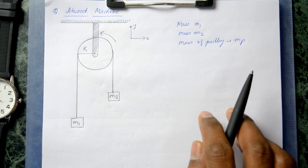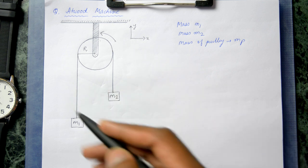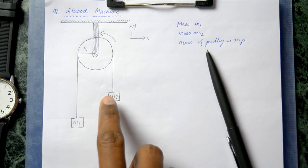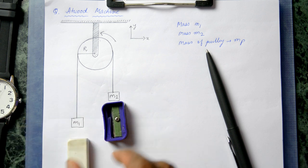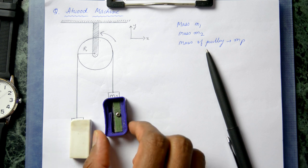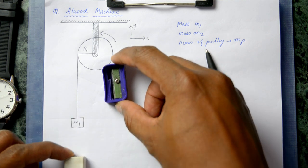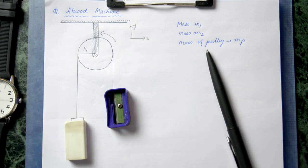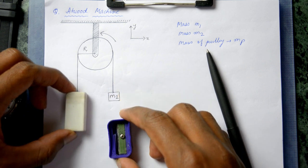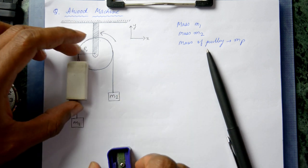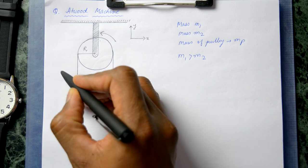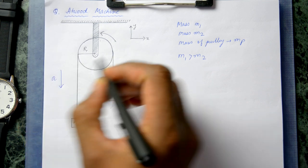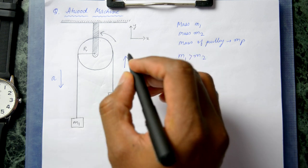If m1 and m2 are equal, there will be no motion. But if m1 and m2 are different, whichever is heavier determines the direction of motion. If m1 is greater than m2, m1 comes downwards and m2 goes upwards. If m2 is greater than m1, m2 comes downwards and m1 goes upwards. Let's assume m1 is greater than m2, so the acceleration happens in that downward direction for m1.